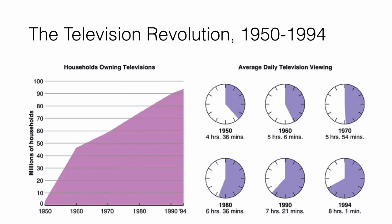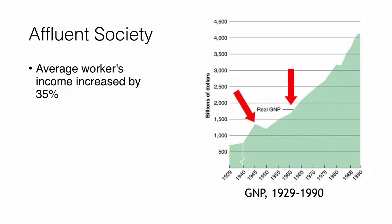Continuing on this theme of affluence, the average worker's income increases by 35% around this time. More and more people are increasing their income by 1955 to 1960. We get a real big jump in 1945, as you can see on the graph, indicating America's entrance into World War II. Then you get our GNP increasing to almost $2 trillion by 1964-1965.